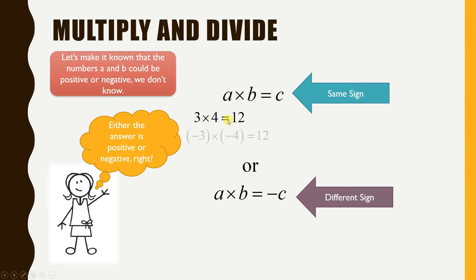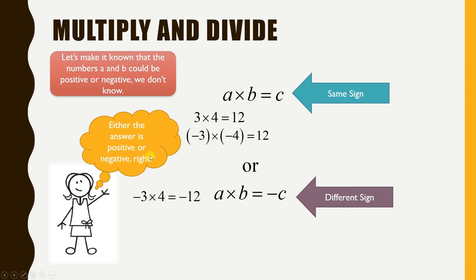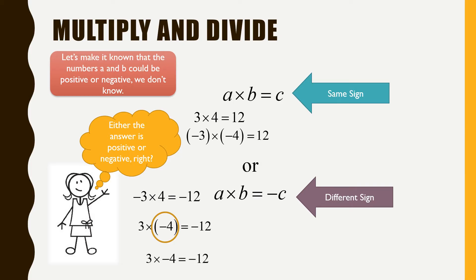For example, 3 times 4 is positive 12, but so is negative 3 times negative 4 — that's also positive 12. If they are the same exact sign, the answer is positive. Whereas if the answer is negative, the two numbers were different signs. It doesn't matter which one is negative or positive — if they're different, the answer is negative. Now about these parentheses — they're really not serving much of a function right here; they're just keeping the negative 4 together, though they can come into play with exponents.